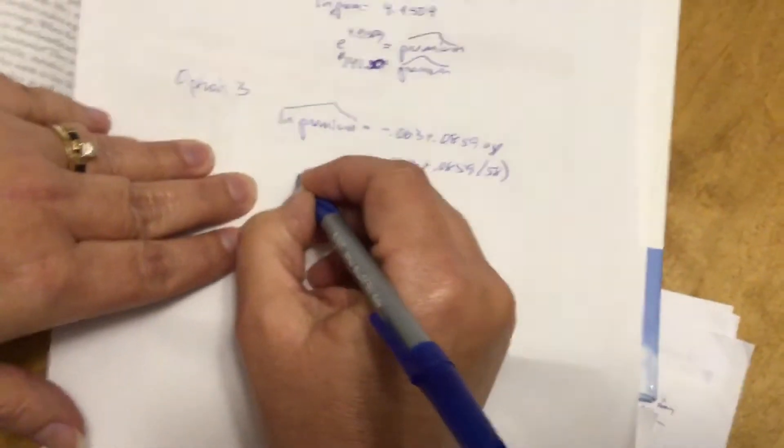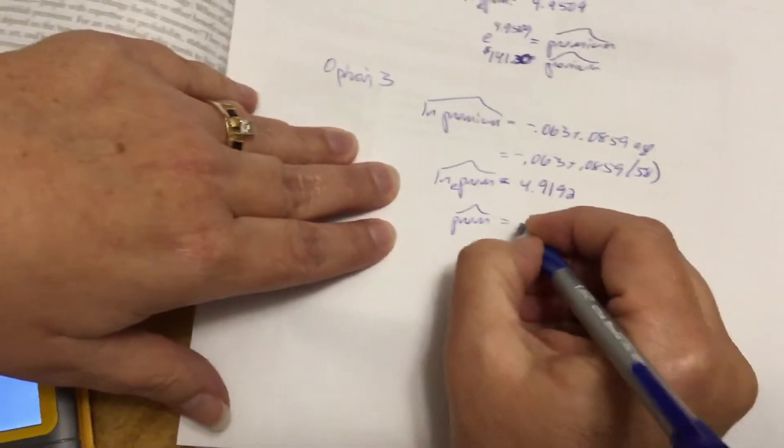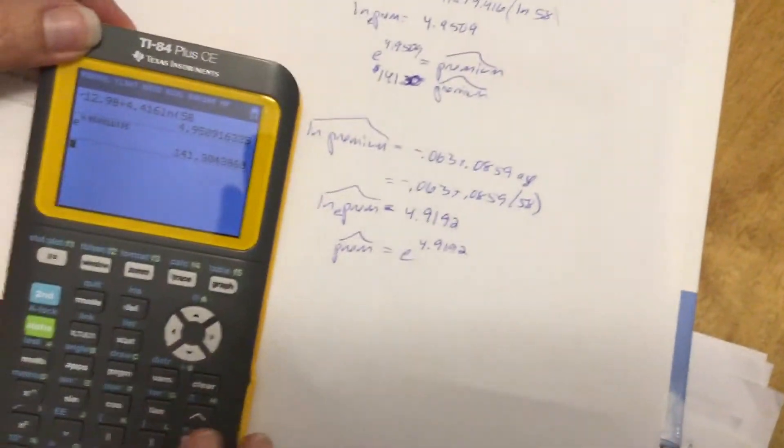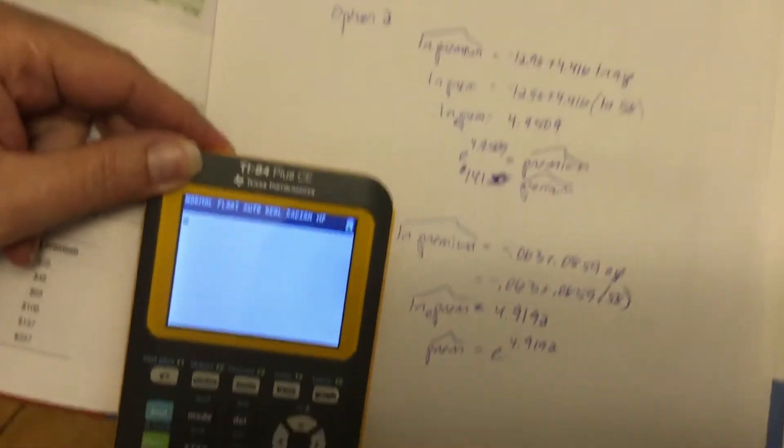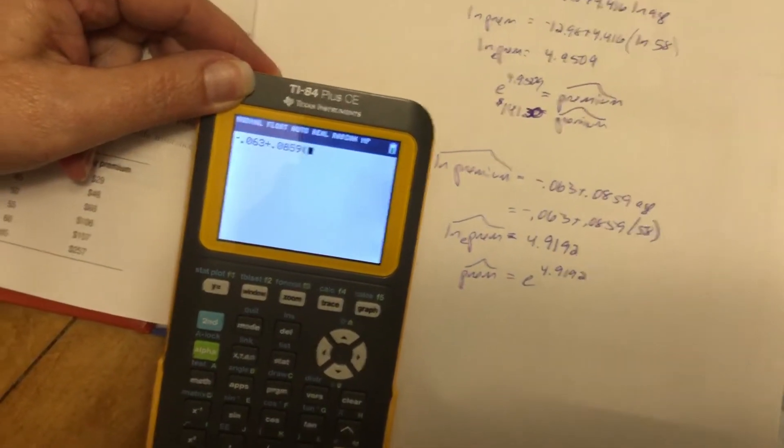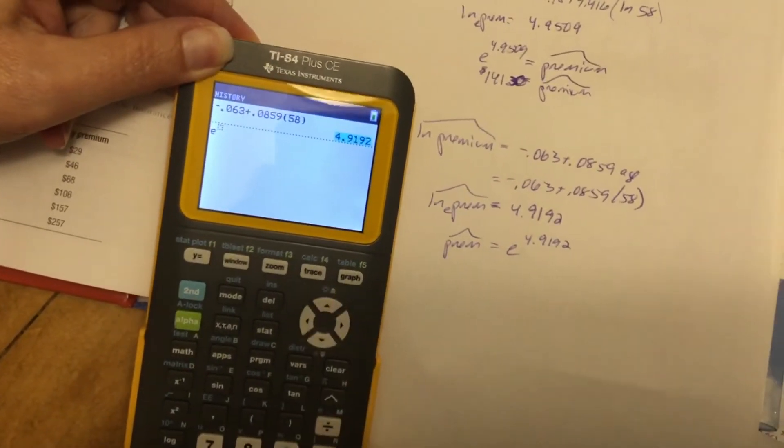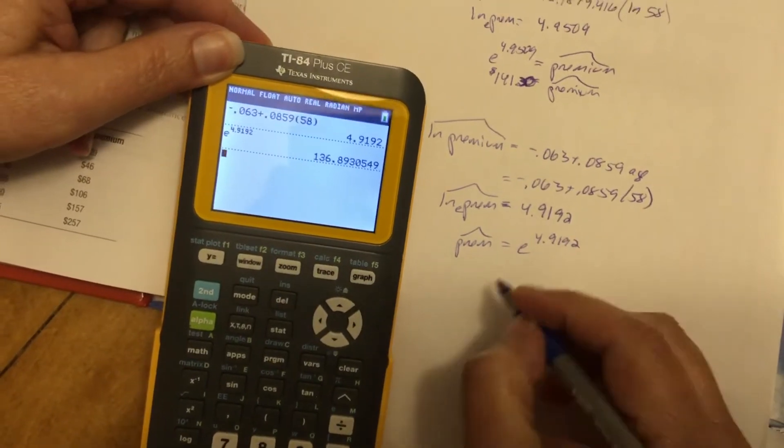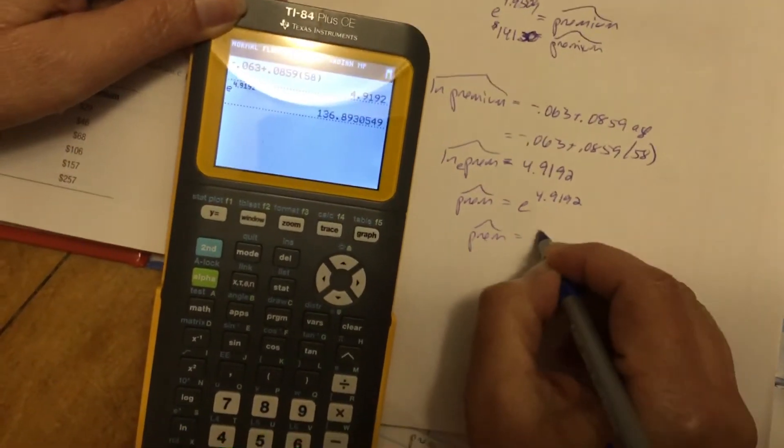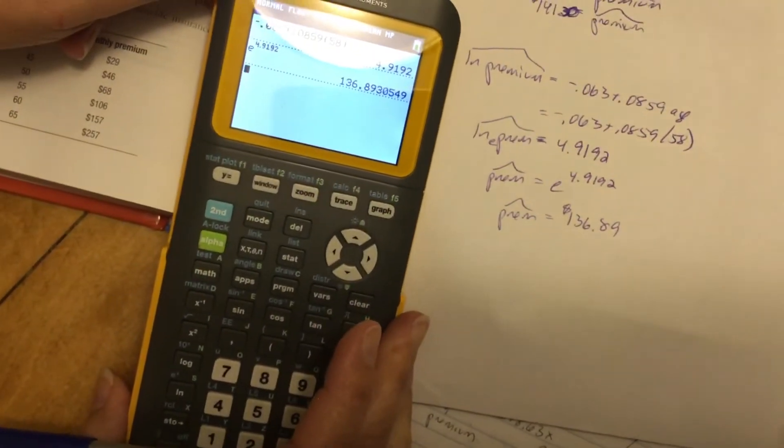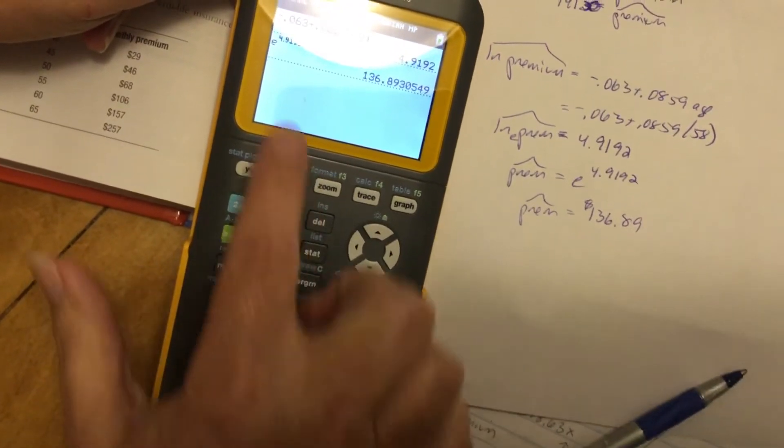So again, knowing that the base of a natural log is E, I can solve for the premium as E to the power of 4.9192. Let me close the calculator. Negative 0.063 plus 0.0859 times 58. So I got that, and then I'm going to do E to that power. So this gives me a premium, a predicted premium of 136.89, $136.89.